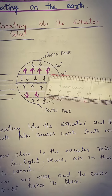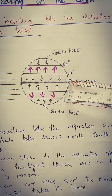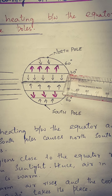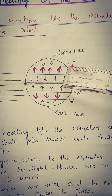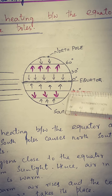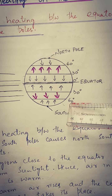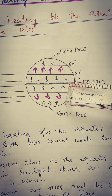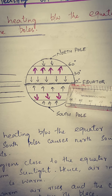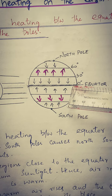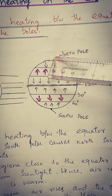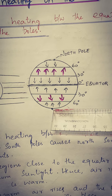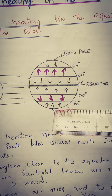Ab yeh jo earth hai, equator ke paas iska 0 degree hota hai, equator ke upar 30 degree, uske baad 60 degree, and similarly downwards 30 degree and 60 degree. Ab jo equator ke paas hawa hoti hai wo garam hoti hai, lekin jo hawa north aur south pole ke paas hoti hai, wo thandi hoti hai.